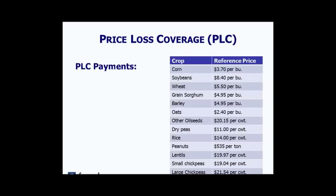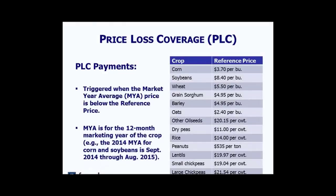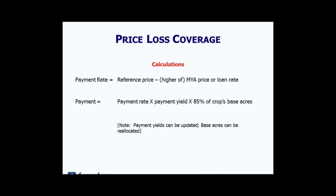The Price Loss Coverage Program is very similar to the counter-cyclical program payments from the 2008 Farm Bill. There are a series of reference prices — for example, corn is $3.70 a bushel. Payments are triggered whenever the market year average price is below that reference price. The marketing year average is the 12-month national average price for the crop year. For corn and soybeans, the market year begins in September 2014 and runs through August 2015.